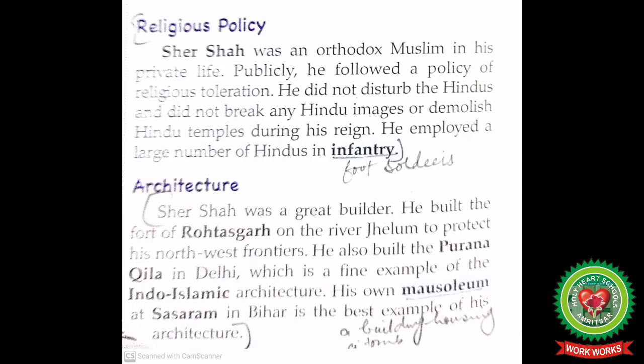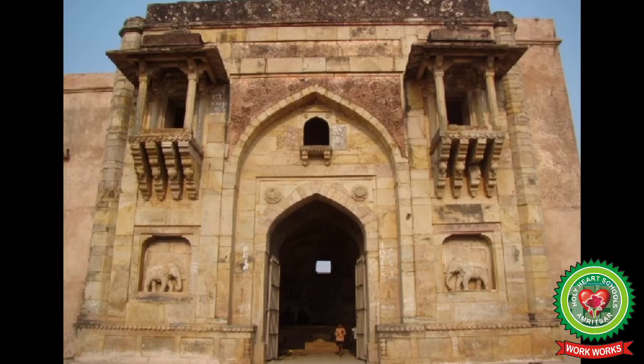Architecture: Sher Shah was a great builder. He built the Fort of Rohtas on the River Jhelum to protect his northwest frontier. He also built the Purana Qila in Delhi, which is a fine example of Indo-Islamic architecture. His own mausoleum at Sasaram in Bihar is the best example of his architecture. The word mausoleum means a building housing a tomb.